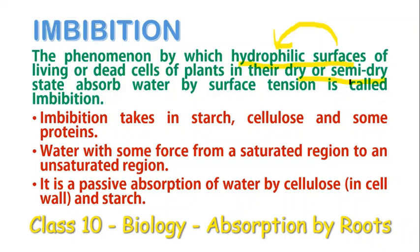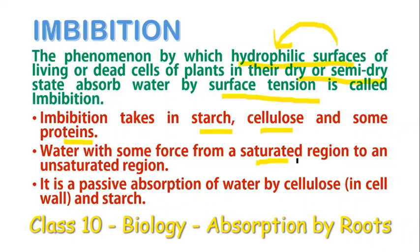This phenomenon of absorbing water by surface attraction by the dead or living cells of plants in their dry or semi-dry state is what we call imbibition. We can see imbibition taking place in starch, cellulose, and some proteins. When imbibition takes place, water moves from a region of saturation to a region where it is unsaturated, and as the water moves with some force, it is absorbed into the root hair cells.